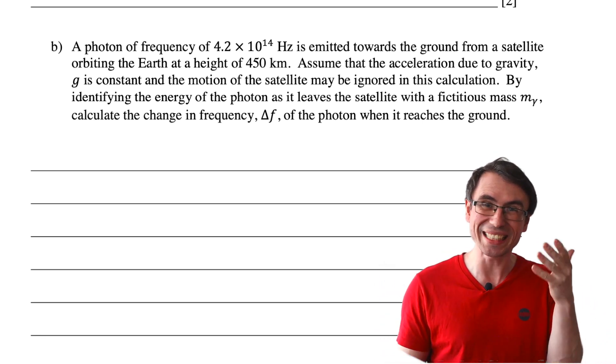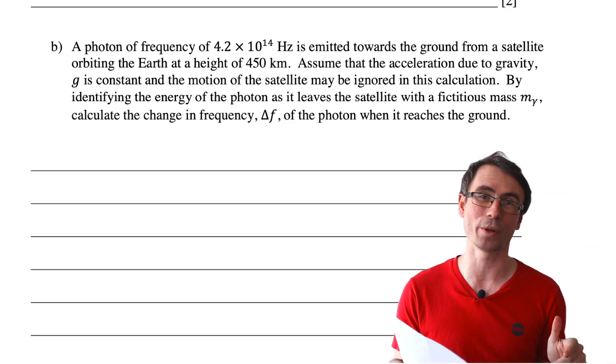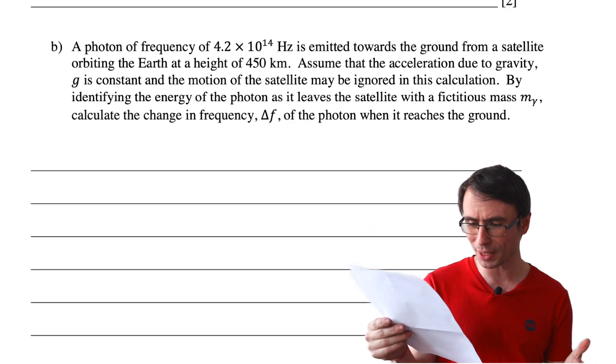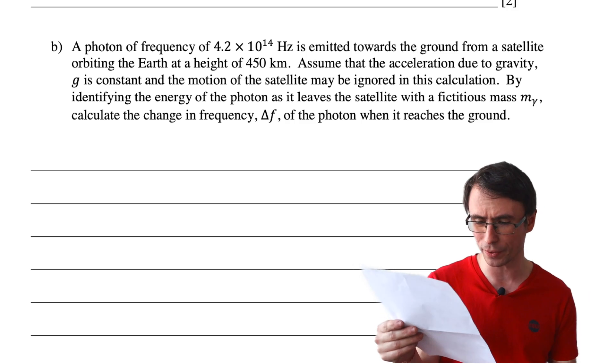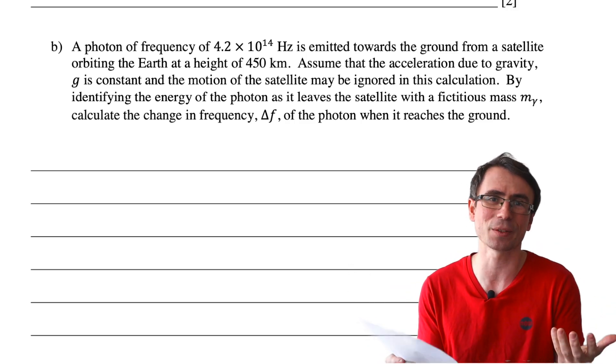So a photon of a given frequency is emitted from a satellite towards the ground. We're given the frequency of the photon and the height. Assume that the acceleration due to gravity is constant and we can ignore the motion between the satellite and the ground.